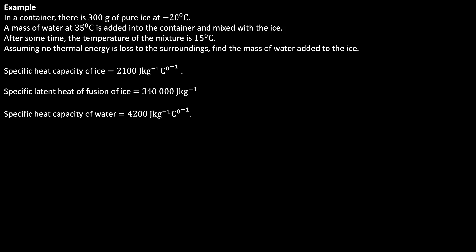In this video, we are going to look at an example: in a container there is 300g of pure ice at minus 20 degrees Celsius. A mass of water at 35 degrees Celsius is added into the container and mixed with the ice. After some time, the temperature of the mixture is 15 degrees Celsius. Assuming no thermal energy is lost to the surroundings, find the mass of water added to the ice.